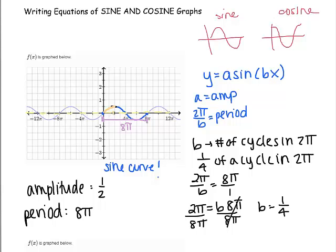Great job guys. So now we're done. Our equation is f of x equals 1 half sine of 1 fourth x.